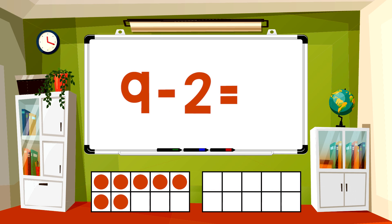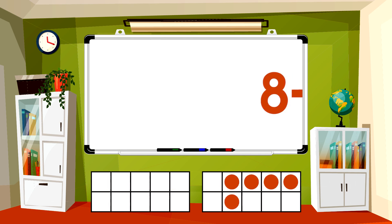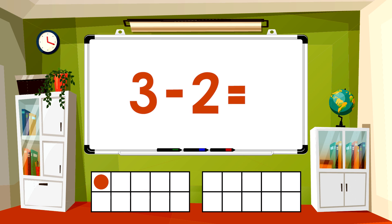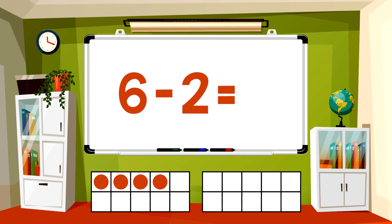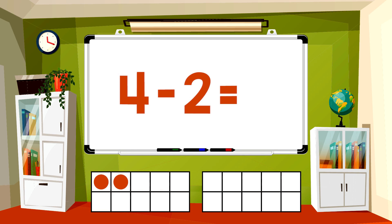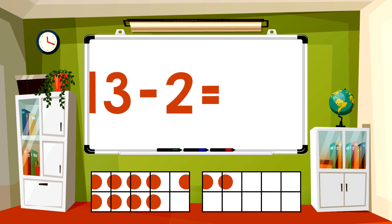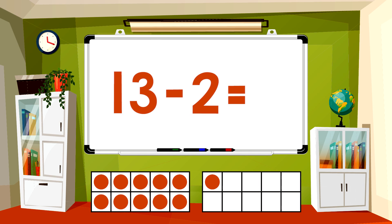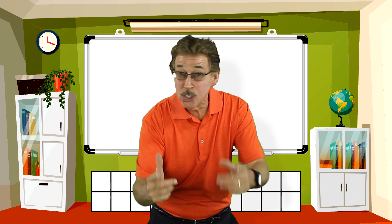9-2 equals 7. 7-2 equals 5. 5-2 equals 3. 10-2 equals 8. 8-2 equals 6. 3-2 equals 1. 6-2 equals 4. 12-2 equals 10. 2-2 equals 0. Now you answer on your own.